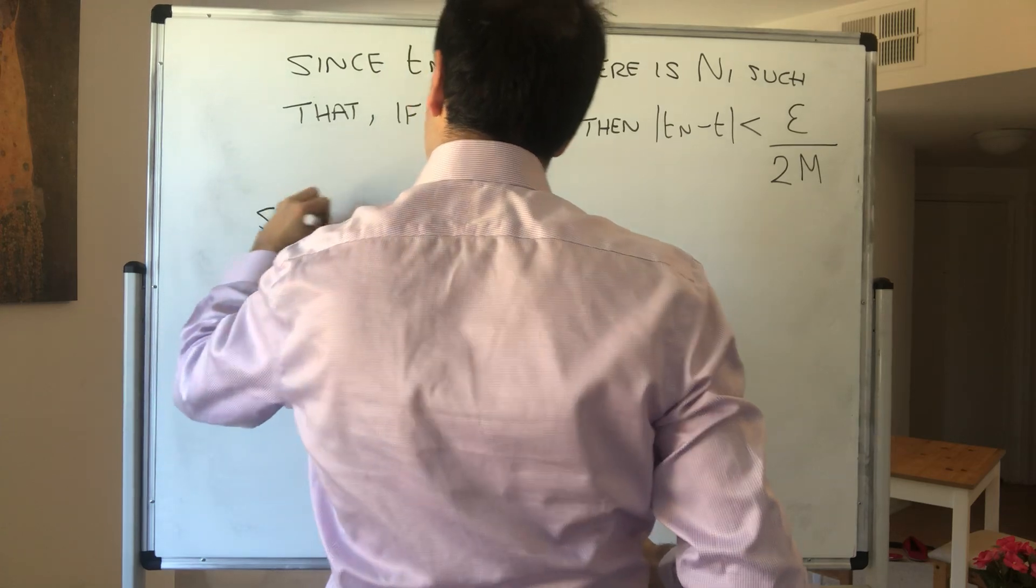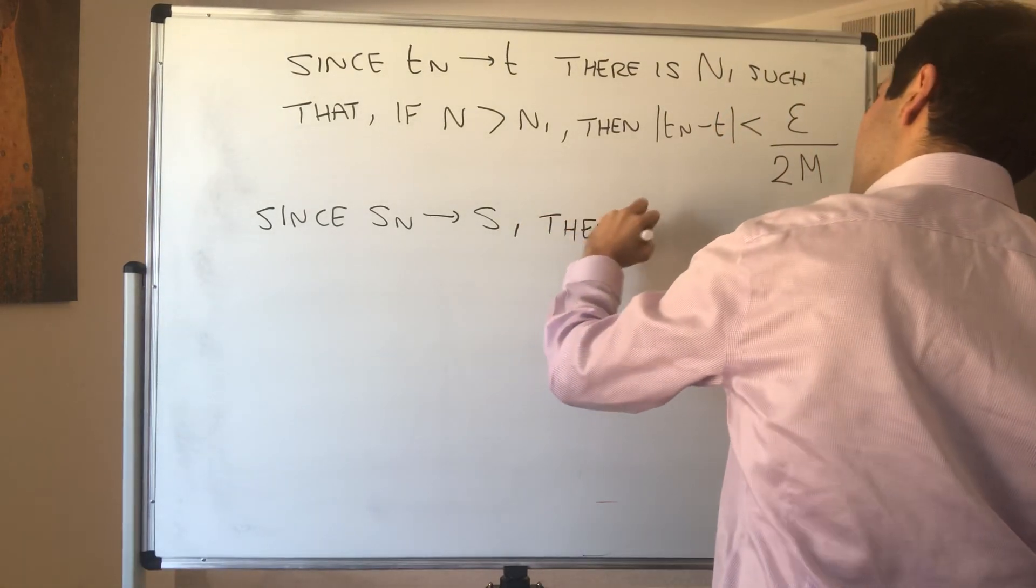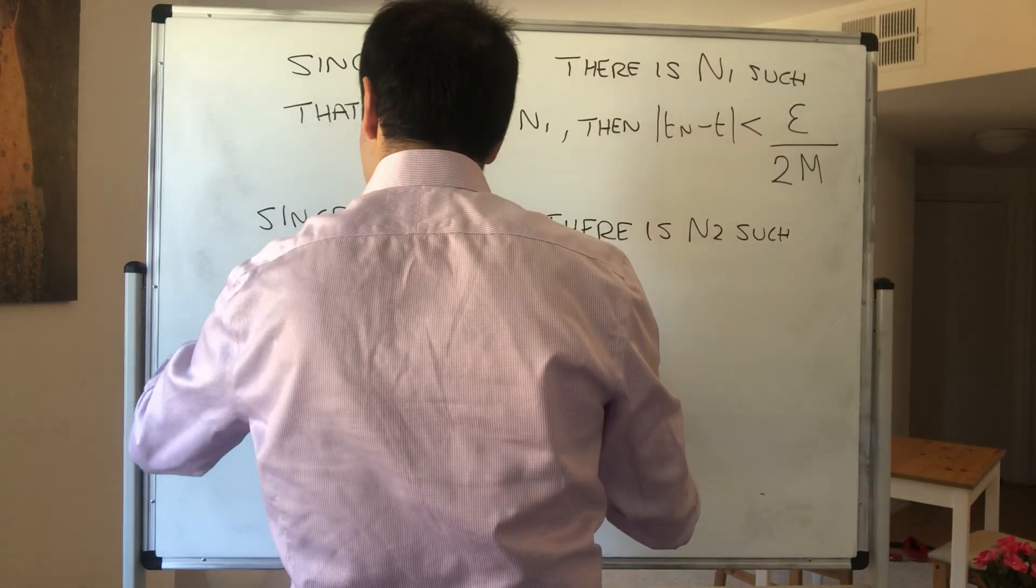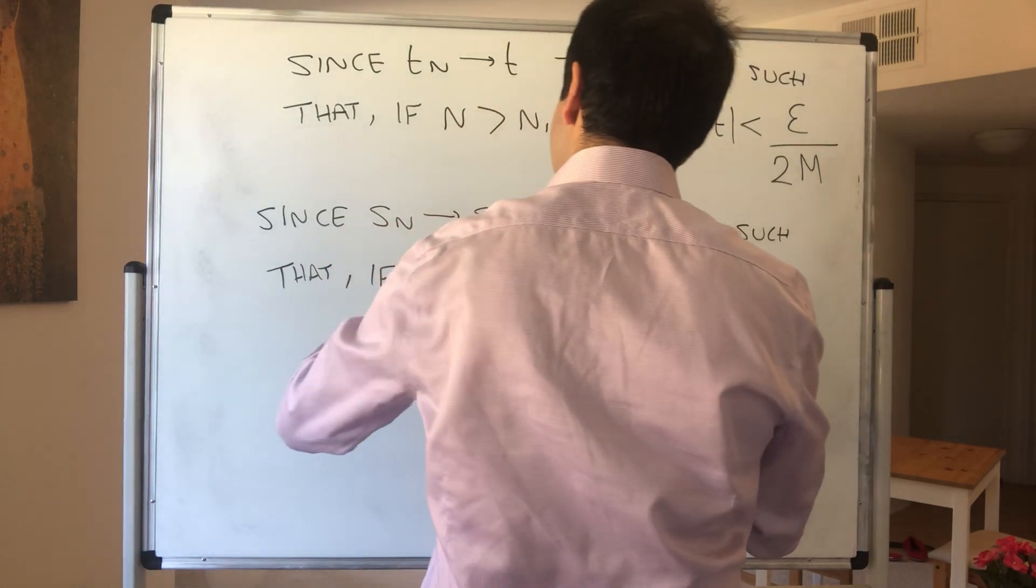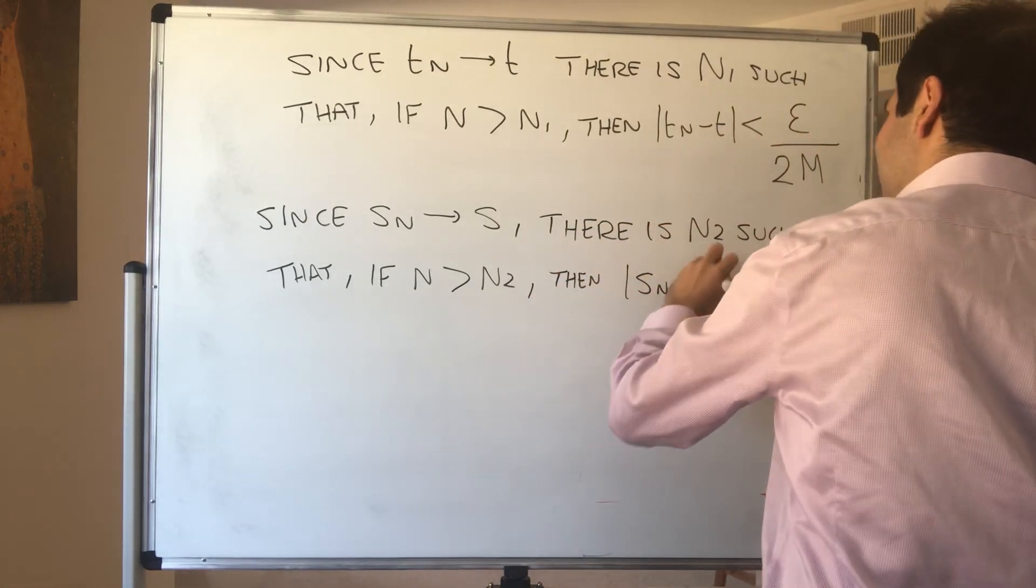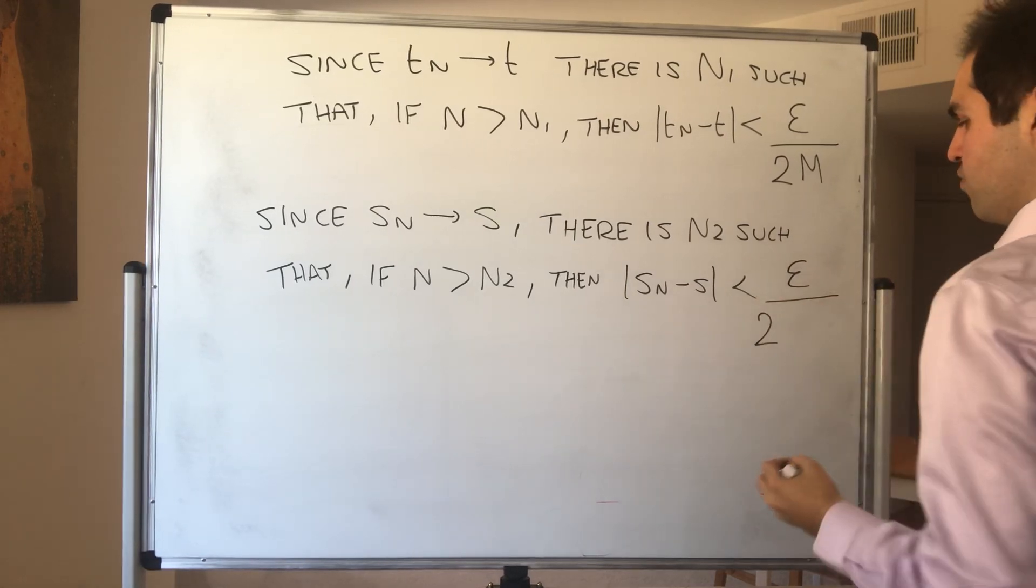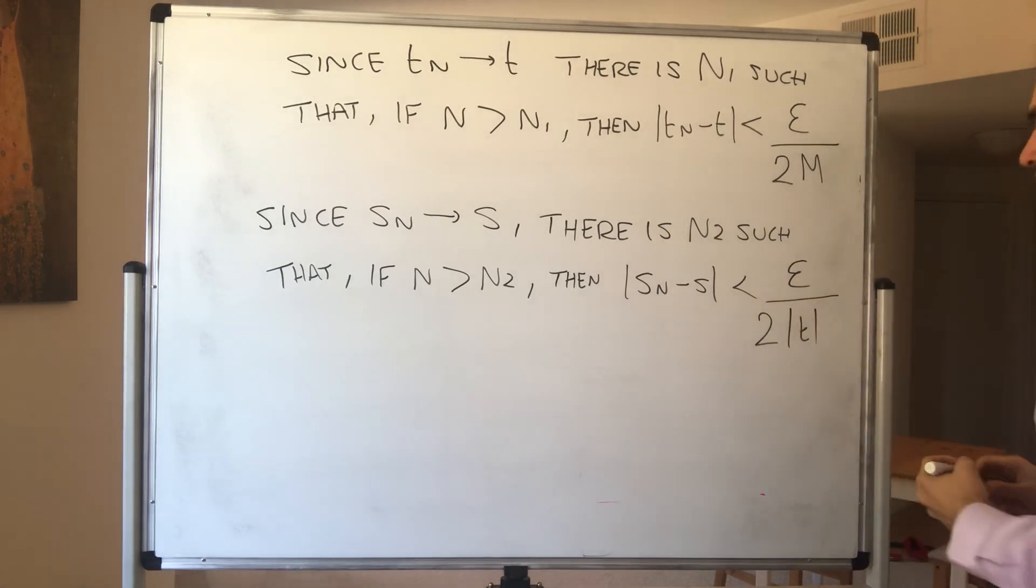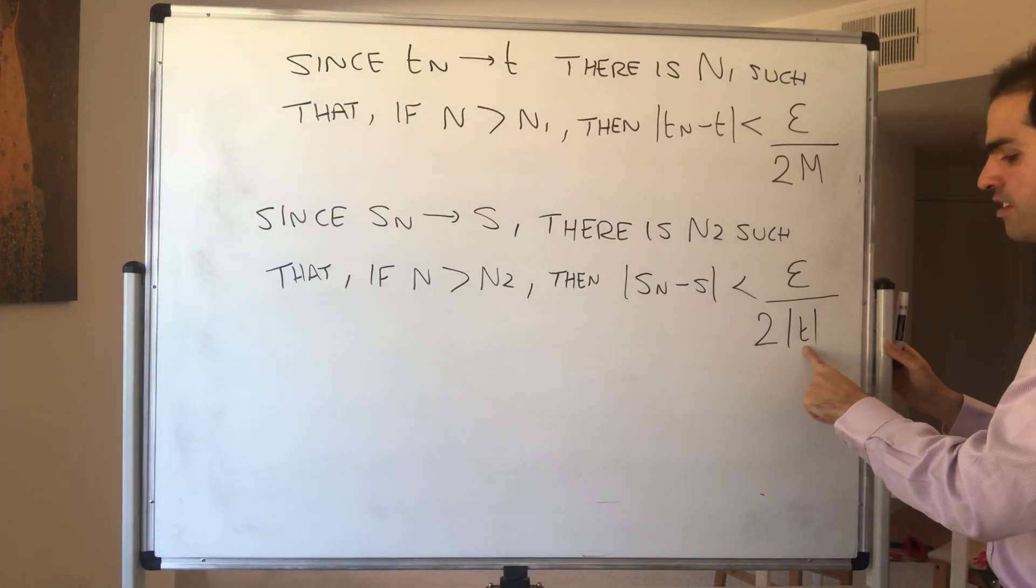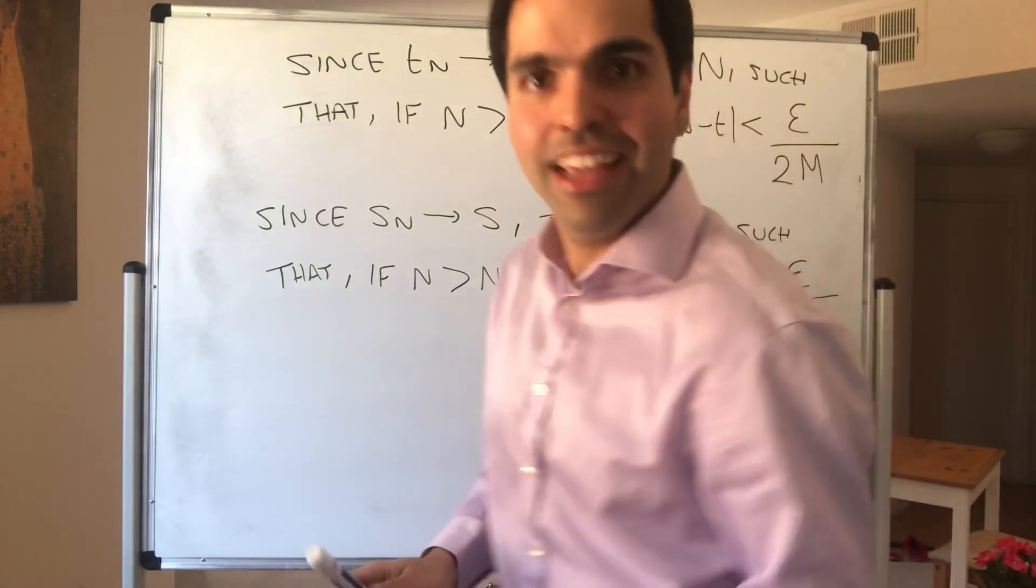And also since Sn goes to S, we know that there is N2 such that if N is bigger than N2, then Sn minus S is less than epsilon over 2, because we have two terms, and absolute value of T, because this will cancel out the absolute value of T term from before. And remember, T is non-zero, so this is positive, and also this is a fixed constant. So it's okay to do that.